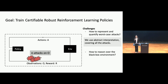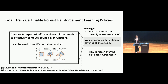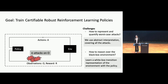For the first challenge, we use abstract interpretation, which is a method from formal methods used to cover all potential bound propagations over functions. Existing works in supervised learning have already proven it can be used for neural network certification. For the second challenge, instead of trying to reason over a black-box environment, we train a white-box environment model to replace the black-box environment, so that we have something to reason over.